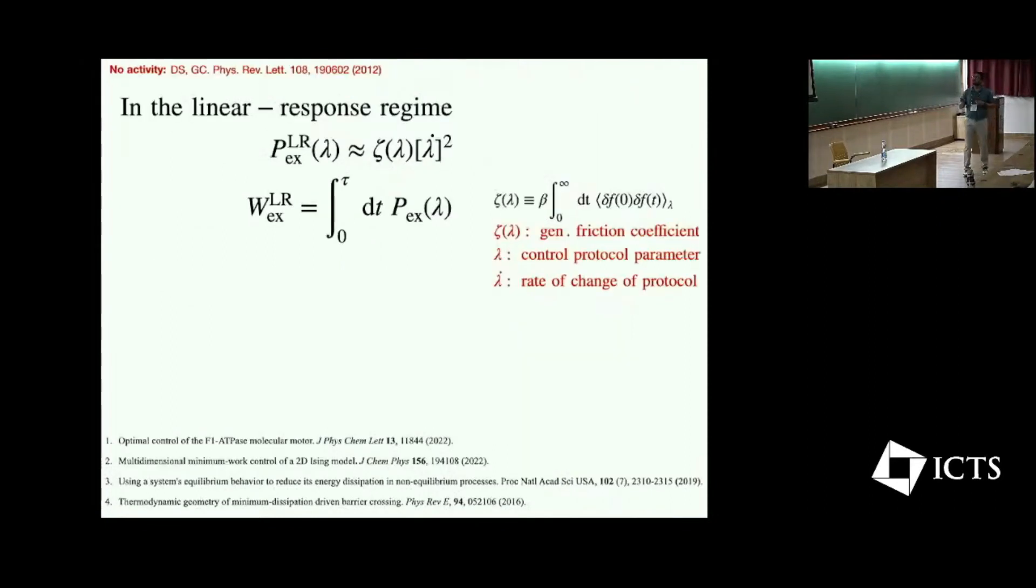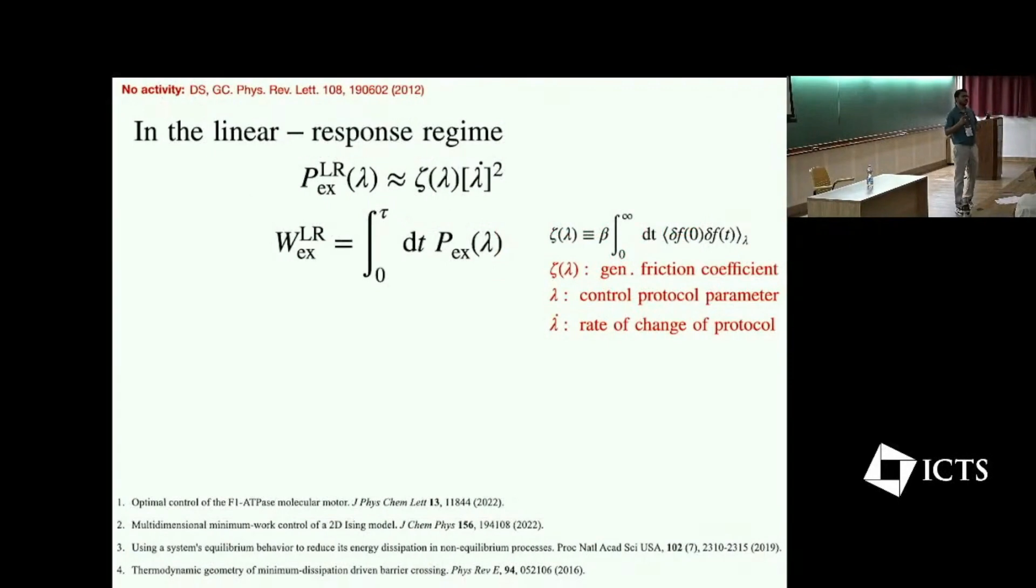So fortunately there is a framework applicable in linear response regime where we can compute optimal protocols for passive particles. This says that excess power, which is the extra power over the quasi-static limit, goes as a product of two quantities: zeta lambda and lambda dot squared, where zeta lambda is the generalized friction coefficient, which is the friction coefficient or resistance experienced by the particle in the control parameter space, and lambda dot is the speed by which I am driving the particle.